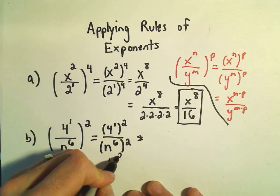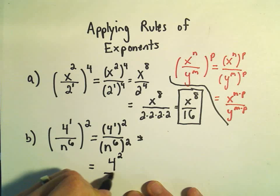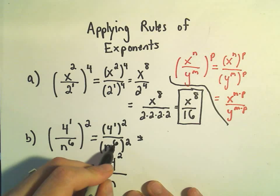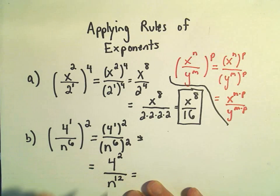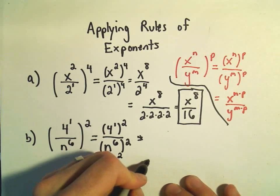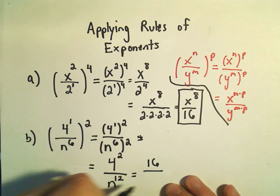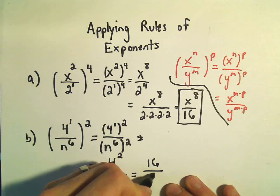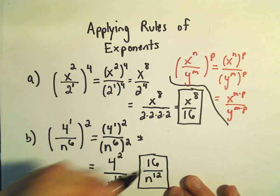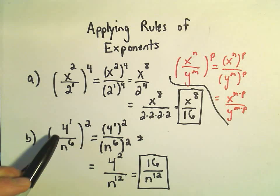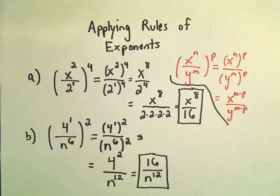So 1 times 2 gives us 4 to the second power. On the bottom we have 6 times 2, which is n to the twelfth. 4 squared is 4 times 4, that gives us 16. And then we have our n to the twelfth on the bottom. So our original 4 over n to the sixth all squared simplifies to 16 over n to the twelfth power.